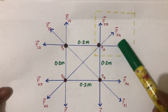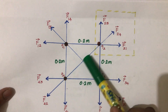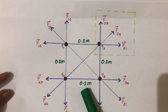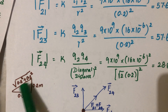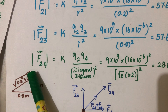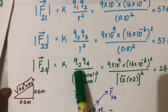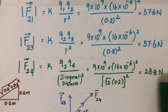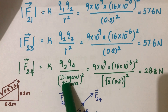F24 is slightly different — the charge values are the same, but the diagonal distance is larger. We calculate the diagonal using the Pythagorean theorem: side² + side² = hypotenuse². With sides of 0.2 m each, the diagonal is √(0.2² + 0.2²). Substituting into F24 = k·q2·q4 / (diagonal)², you get 28.8 newtons. This makes sense — the larger distance results in a smaller force, since force and distance are inversely proportional.